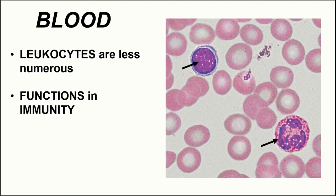The less numerous cell types are the leukocytes — shown by the arrows here are two examples. The top leukocyte is called a lymphocyte and the bottom one is called a neutrophil. All leukocytes function in protection through the immune system: they search out microorganisms, viruses, bacteria, fungi, and other things within the blood that shouldn't be there, and they destroy them — protecting our body by fulfilling immune function roles.